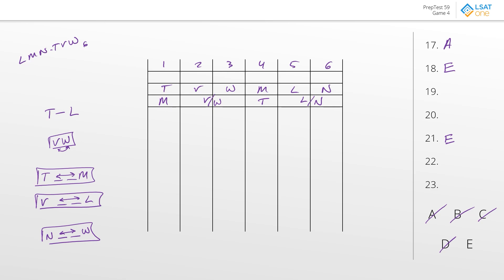Question 19: which condition would completely lock the game? Answer A — L in year five: putting L in five would place V in two, but T still seems flexible and W could go in one or three, so that's not enough to lock the game. Answer B — M in year six: T would go into three and L into four or five, but both still seem viable.